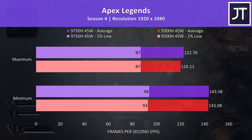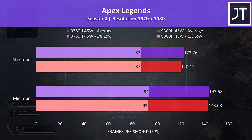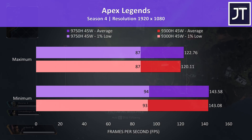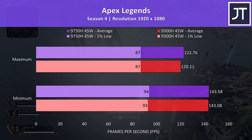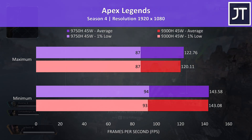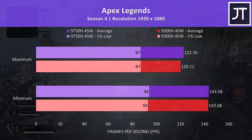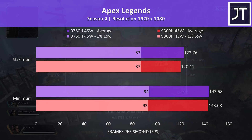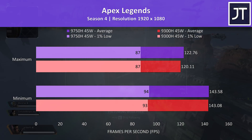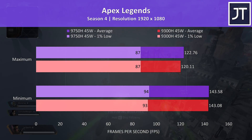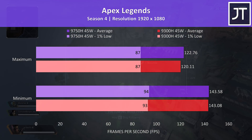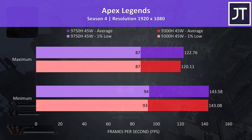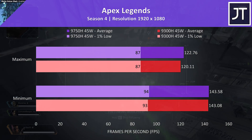Apex Legends was tested running through the same section of the map on both laptops. Unfortunately I tested with the default frame cap enabled, so both were about the same at minimum settings, however even maxed out the i7 was only 2% faster than the i5.